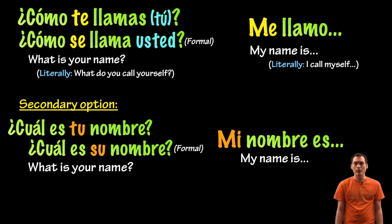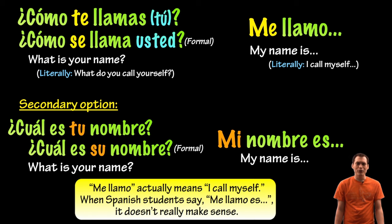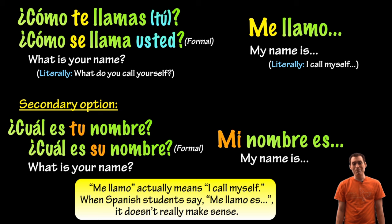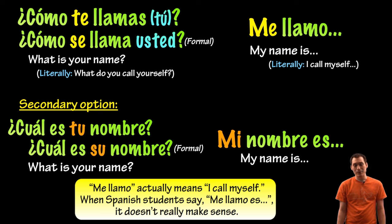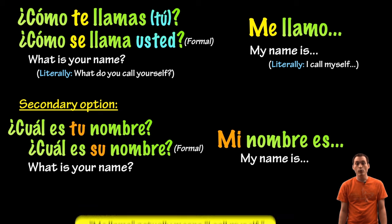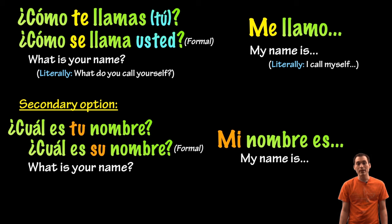You might notice that people learning Spanish will often think that 'me llamo' means 'my name,' so they'll say 'me llamo es.' This would actually translate to 'I call myself is,' which would sound funny to a native Spanish speaker. If you want the literal translation of 'my name is,' use 'mi nombre es' instead.